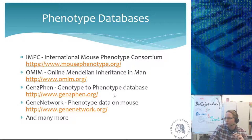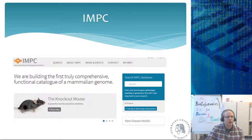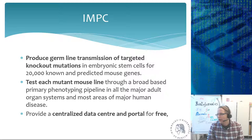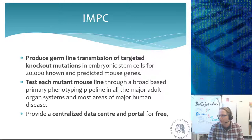Let's take a look at the IMPC website. The IMPC's goal is to produce germline transmissions of targeted knockout mutations. They have 20,000 known and predicted mouse genes and test each mutant mouse line through a broad primary phenotyping pipeline covering all major adult organ systems and most areas of major human diseases. They provide a centralized free data service and portal. Currently they have knocked out around 7,022 genes of the 20,000 genes in mice.